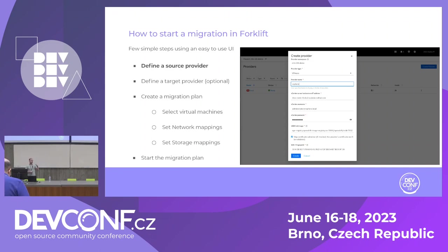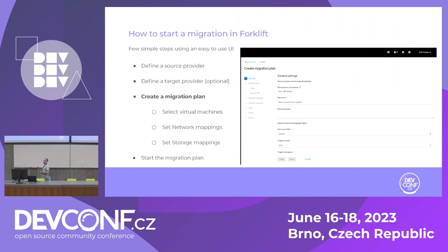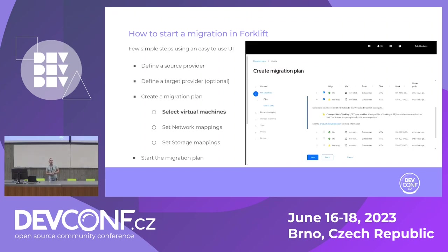If we migrate to a remote cluster — not the cluster that Forklift runs on — then we also need to define that cluster. But in this example, let's say we migrate to the local cluster where Forklift runs, so we skip that step and go to the creation of the migration plan. In this form we specify general things like name, description, and pick the source and target providers, as well as the target namespace where the virtual machines will be defined.